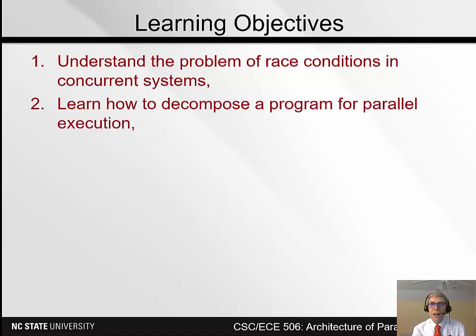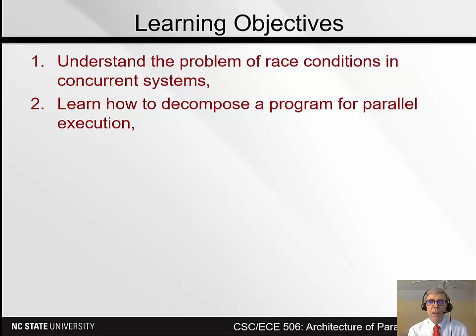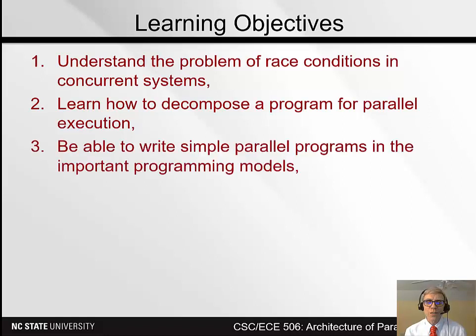Secondly, we'd like to learn how to decompose a program for parallel execution. Some of the variables in a multiprocess program will need to be shared between the different processors or threads because they're used for communication. But other variables, like loop control variables, will be private to an individual processor. Looking at a program and learning to identify which are private and which are shared is goal number two of the course.